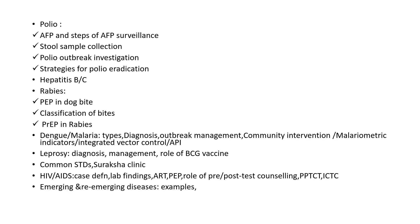Regarding polio, apart from the basic parameters, you need to look at acute flaccid paralysis (AFP) and the steps of AFP surveillance — how to collect the stool sample, the sample size, how to transport it, the transport media, how outbreak investigation is undertaken in case of polio, and the strategies for polio eradication.